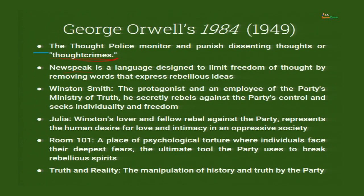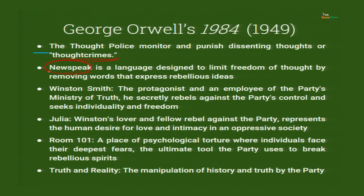Newspeak is a language designed to limit freedom of thought by removing words that express rebellious ideas — like 'love' or 'resistance.' You cannot use these words; instead, you must use the language Newspeak. The main character, Winston Smith, is an employee of the Party's Ministry of Truth. He secretly rebels against the Party's control and seeks individuality and freedom. This government has a Ministry of Truth that manipulates facts. Julia, Winston's lover and fellow rebel, represents the human desire for love and intimacy in an oppressive society.